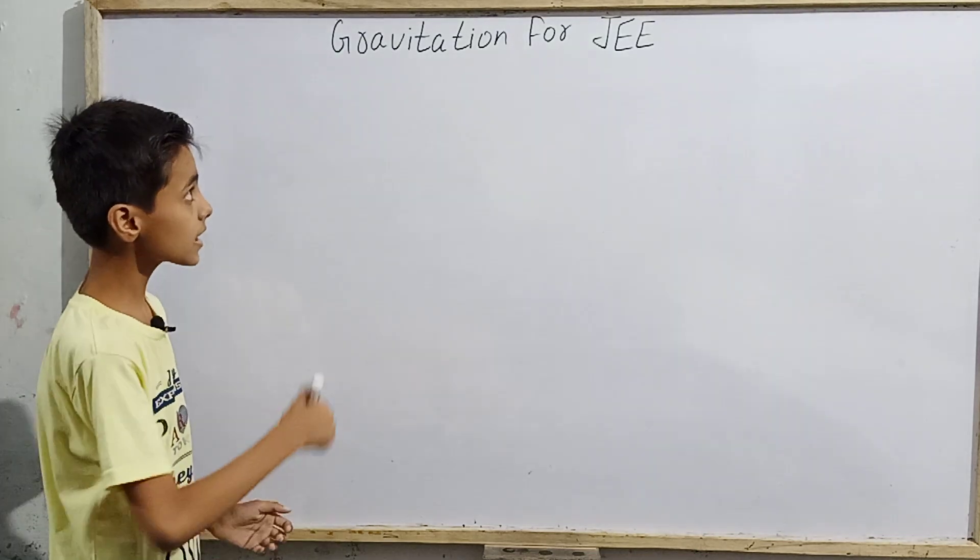First, let us discuss what gravitational force is. Every object in the universe tries to attract every other object. For example, this board and this marker are exerting a force on each other, but the magnitude of this force is very small — that is why when we let the marker go, it falls down, not toward the board. Higher the mass, higher the gravitational force.